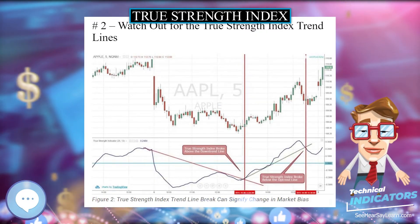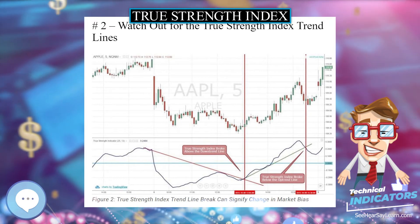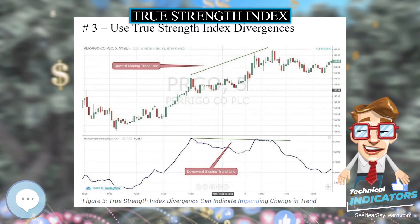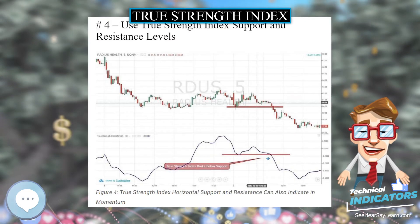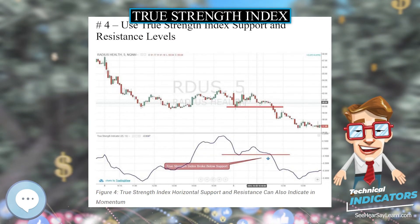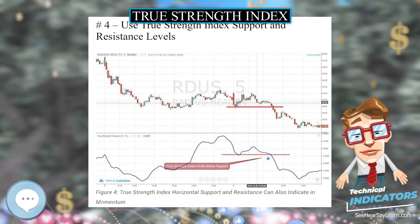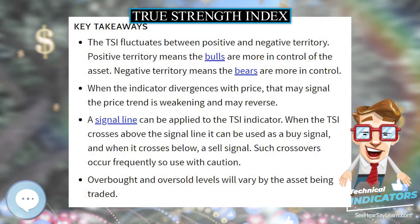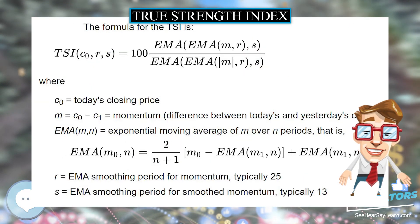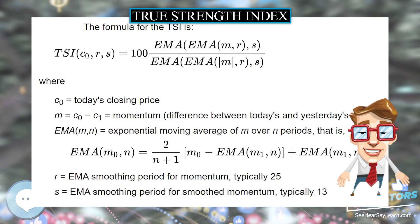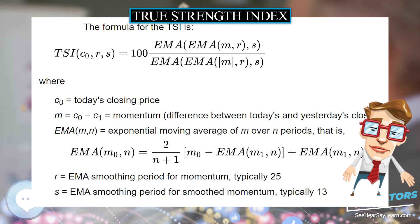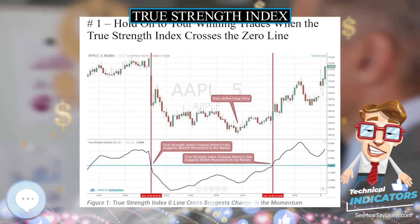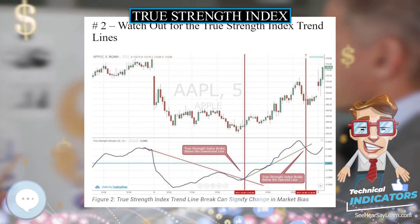While the TSI output is bound between plus 100 and minus 100, most values fall between plus 25 and minus 25. Blau suggests interpreting these values as overbought and oversold levels, respectively, at which point a trader may anticipate a market turn. Trend direction is indicated by the slope of the TSI — a rising TSI suggests an uptrend in the market, and a falling TSI suggests a downtrend.